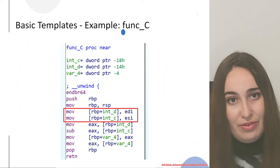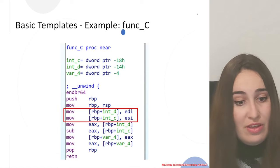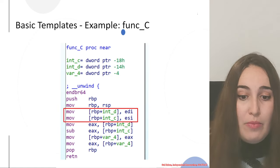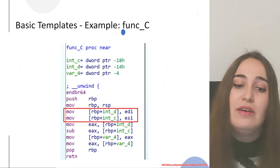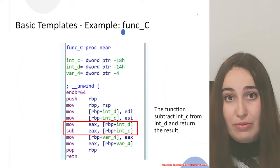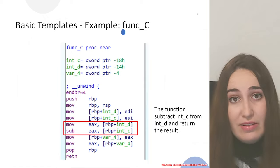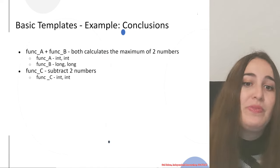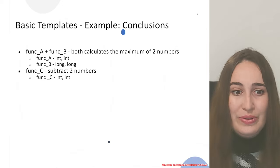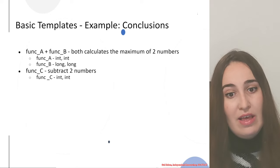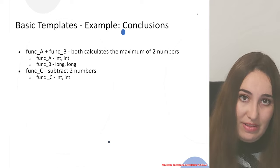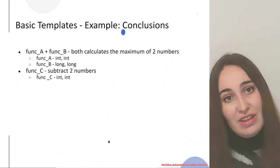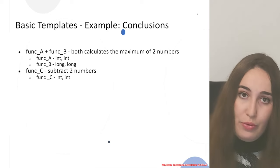For the third function, function C, we can see it is much shorter — just a few lines of assembly. We have the two received parameters, stored on the stack like in the previous cases. This time, the function subtracts the two numbers from each other — it takes int b and subtracts int c from it, then returns the result. So this function is different: although it receives the same parameter types, it performs subtraction instead of finding the maximum.